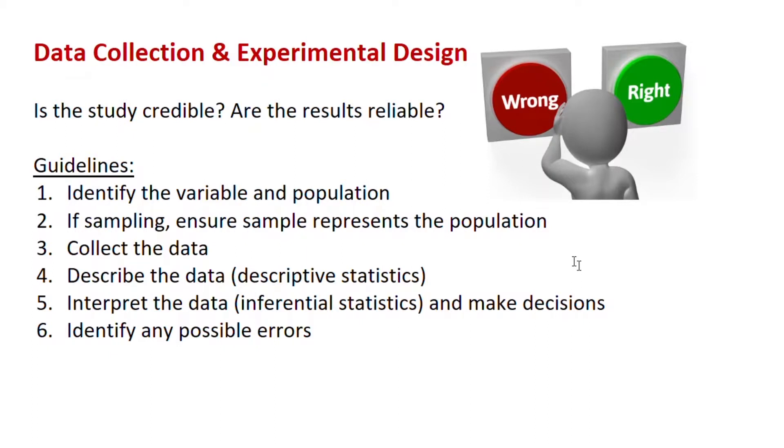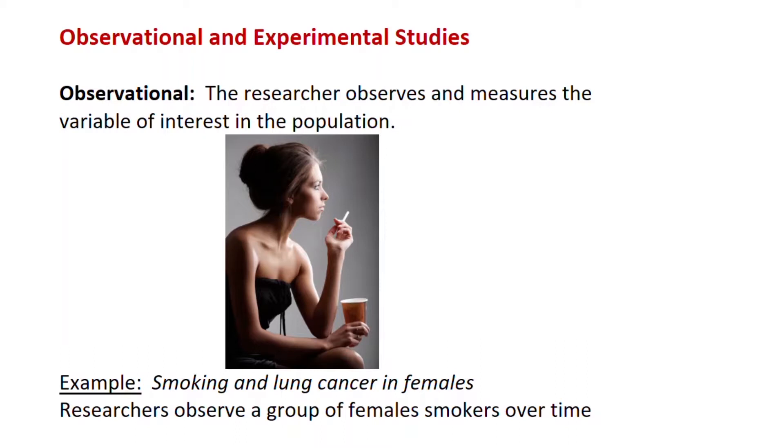Firstly, you need to identify the variable you want to study, the focus of the study, and the population of the study. You'll most likely be sampling, so you want to ensure the sample represents the whole population that you're interested in. Then of course a process to collect the data. After the data is collected, you want to describe the data using descriptive statistics, draw charts and that kind of thing. And then you want to interpret the data using inferential statistics and make decisions about the data. You also want to identify any possible errors in the study.